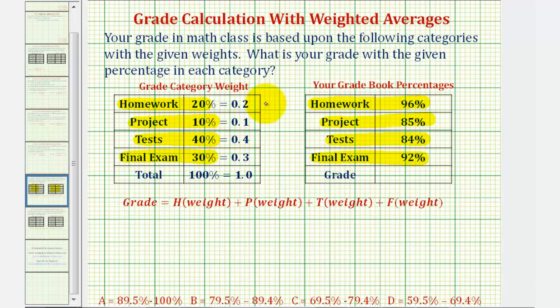Looking at the homework average of 96 percent, this is worth two-tenths of the semester grade. The project grade of 85 percent is worth one-tenth of the semester grade. The test average of 84 percent is worth four-tenths of the semester grade, and so on.